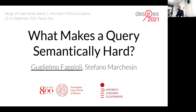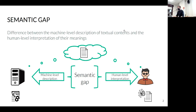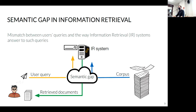First, allow me to introduce what we mean by semantically hard queries. It is a concept tightly related to the concept of semantic gap, which describes the difference in how humans encode and imagine information versus the way a computer or machine is able to encode it. In search engines and information retrieval, this means the mismatch between how a user expresses their information needs through a query and how the system answers through its retrieval model.